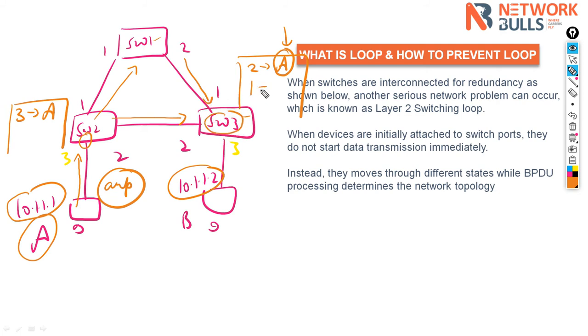In this case, switch one will receive the same MAC address on port number one also. This particular situation is called loop. No switch can learn the same or identical MAC address on two different ports. One port is allowed to learn one or more MAC addresses, but two ports cannot learn the same MAC address. This situation is called loop.